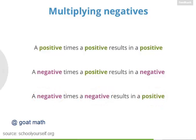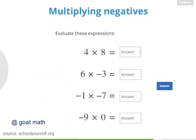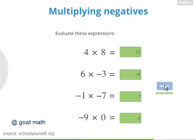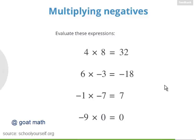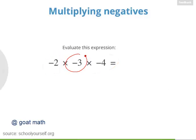Let's see if you got the hang of this. Try evaluating these four expressions. Nicely done — here are the answers you found. Here's the last question: try evaluating negative 2 times negative 3 times negative 4. You can multiply these together in any order you want, but don't forget about the minus signs.